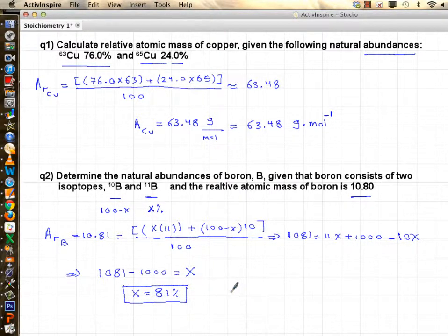And what is the other one? 100 minus x is 19% is the lighter boron, boron-10, and you have 81% of heavy boron, boron-11.